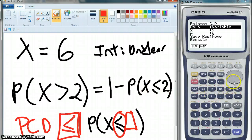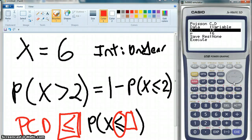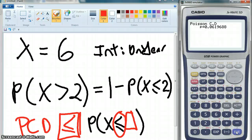So, I've still got variable, and then my X is going to be two, so it's less than or equal to two, and my mean, or lambda, is still six. So, I execute, and I get